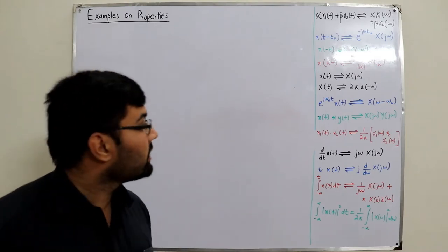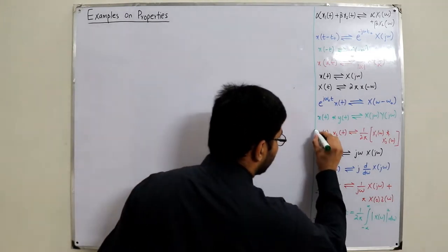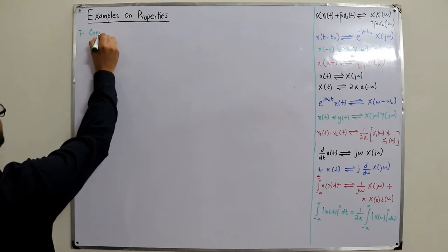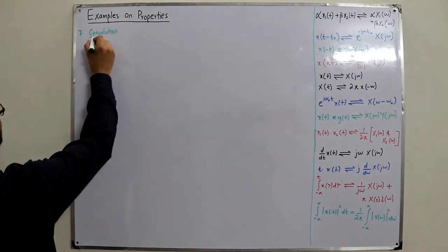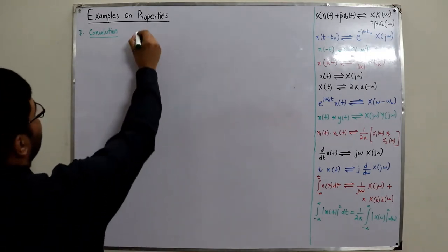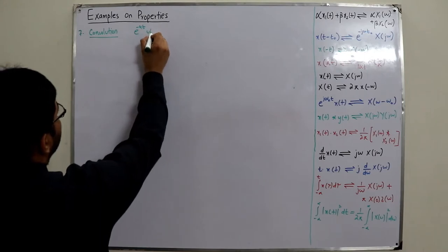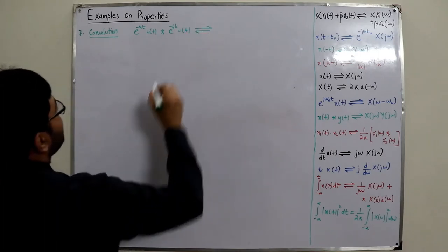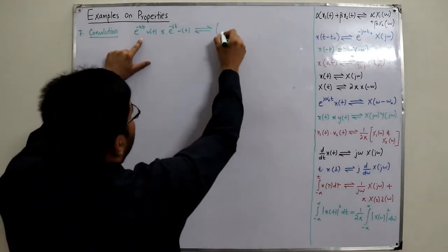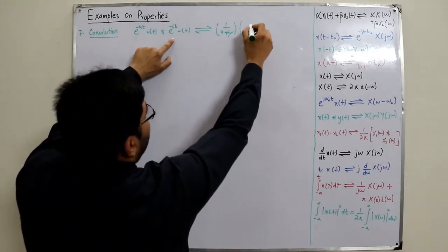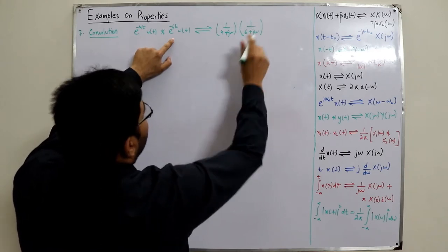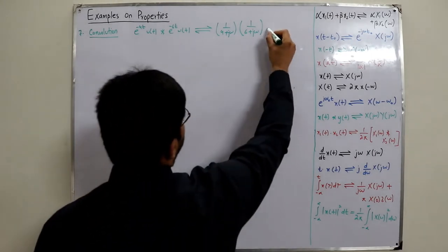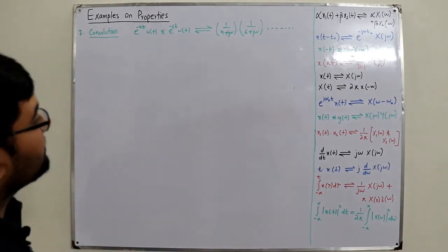Coming to property number seven: convolution in the time domain. If you convolve two signals in the time domain, the corresponding Fourier transforms get multiplied in the frequency domain. For example, e^(-4t)u(t) convolved with e^(-6t)u(t) gives transforms 1/(4+jω) and 1/(6+jω) respectively, and you multiply them to get the final answer.